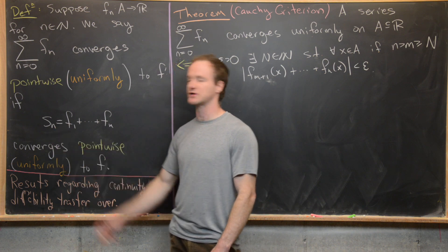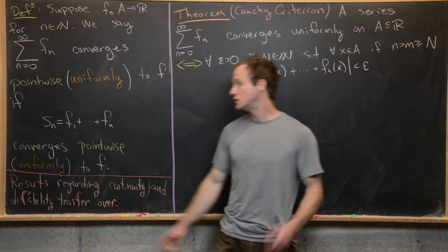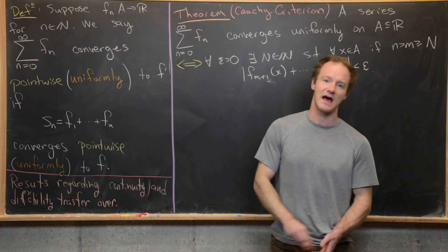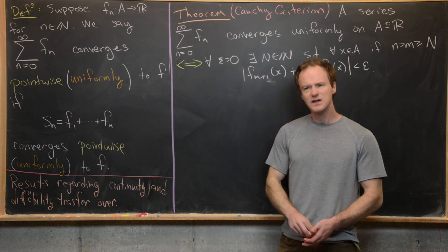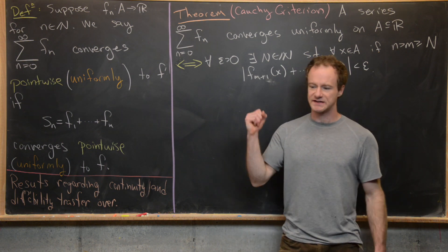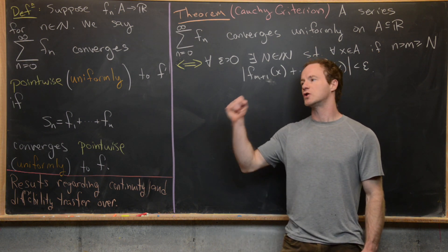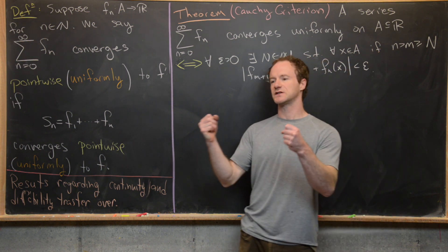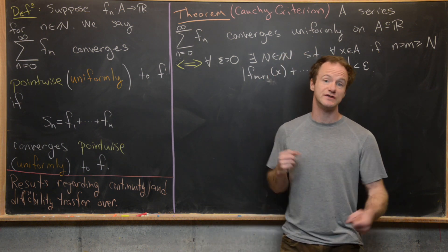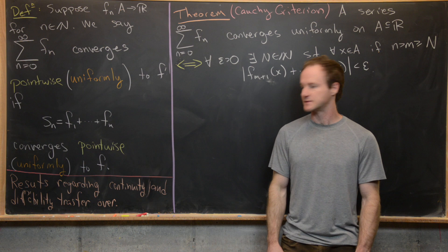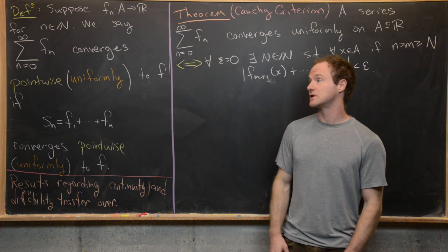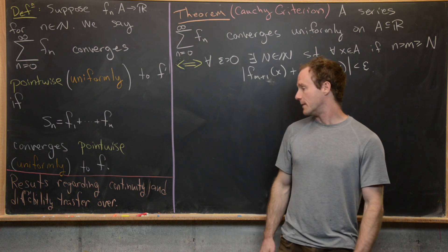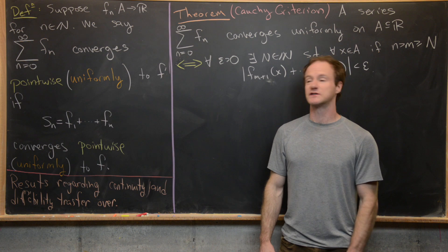The sequence of partial sums can be defined as a new function s_n, which is given by f1 plus f2 all the way up to f_n. Just like we did with sequences and series of numbers, we can rewrite all of our results involving sequences of functions to results involving series of functions, just using the notion of the sequence of partial sums. All of the results involving series of functions also transfer over by looking at the sequence of partial sums.